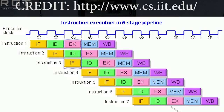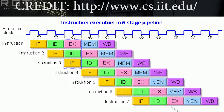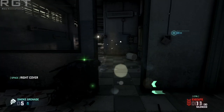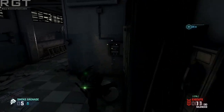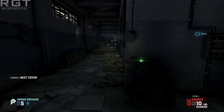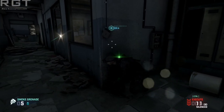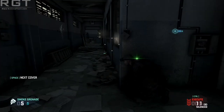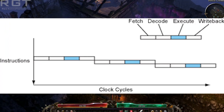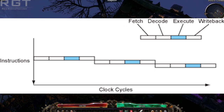So what is a processor pipeline? You might have heard of a pipeline before, particularly the basic five stages, and we'll get to what those are in just a moment. But first, why does the pipeline exist, and what are its stages for? In the very early days of processors, up until the 386, CPUs were really only capable of handling a single instruction at a time. So if a particular instruction took longer, nothing else could happen until it was finished running, and then the next instruction would begin its journey through the processor.